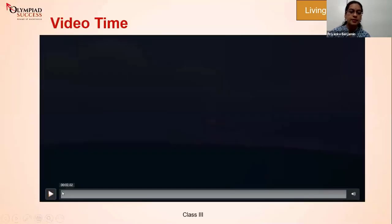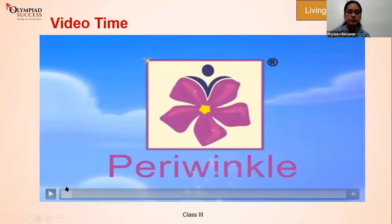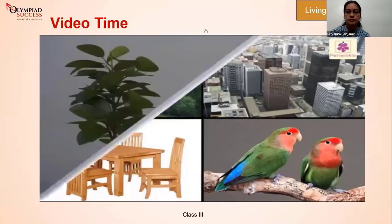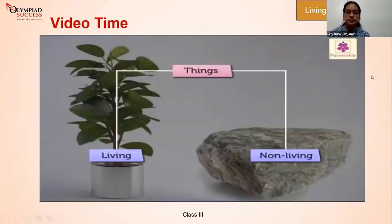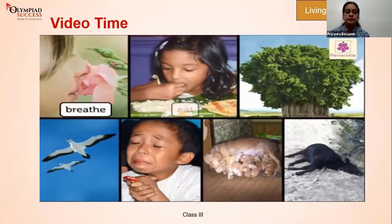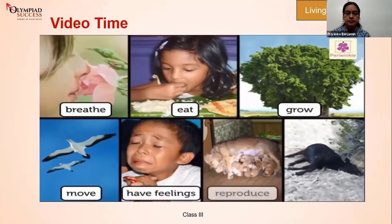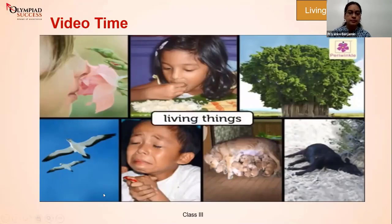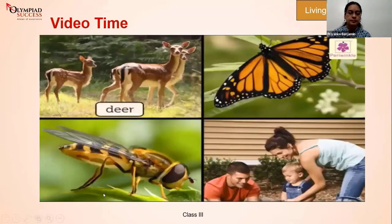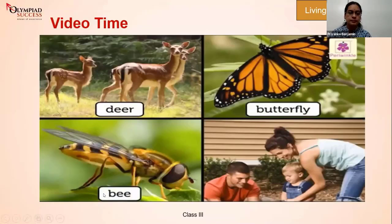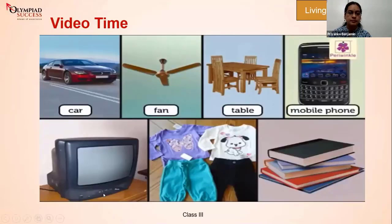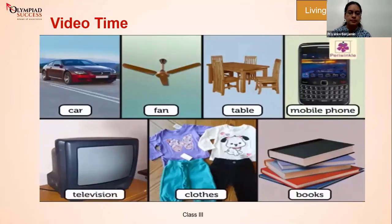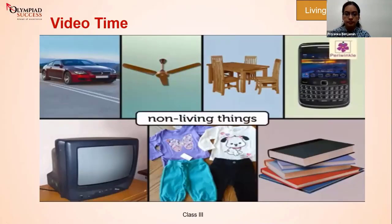Let's first have a look at this video, and then we will move to the next slide. Everything around us can be classified into living and non-living things. Things that can breathe, eat, grow, move from one place to another, have feelings, produce their young ones, and die are called living things — for example, a deer, butterfly, bee, and human being. Things that cannot do these are called non-living things.